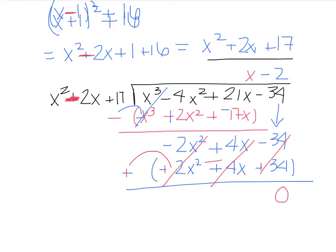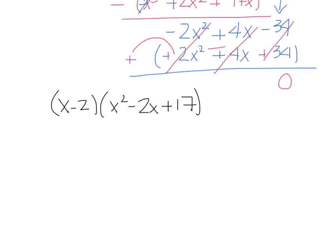What that tells us is our linear factor is x minus 2, and our quadratic factor is x squared minus 2x plus 17. Our original function asked us to find all the zeros. So our zeros are x equals 2, and then we have 1 plus 4i as well as 1 minus 4i that was given. That completes our problem.